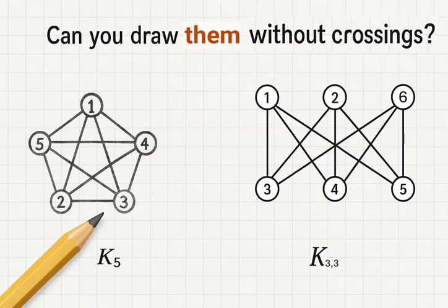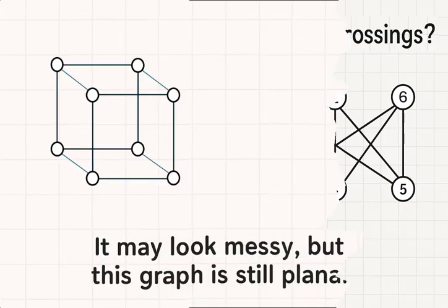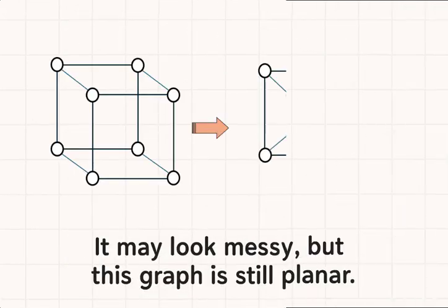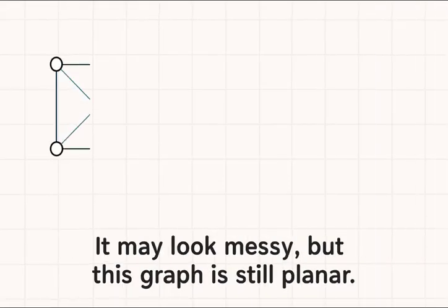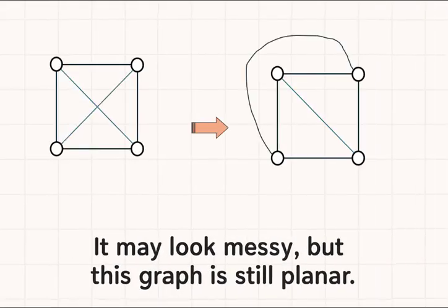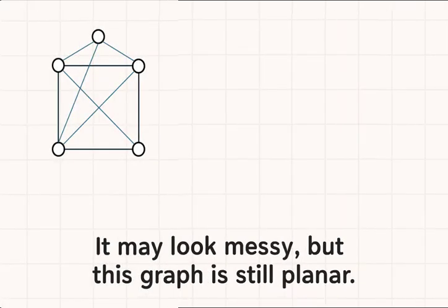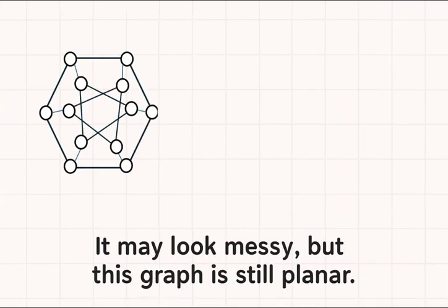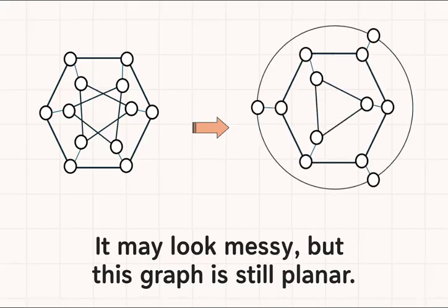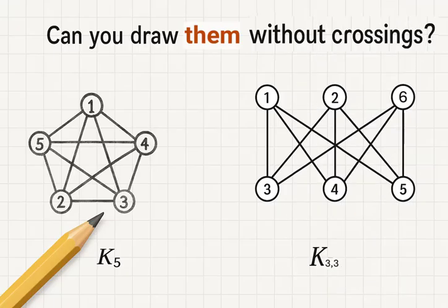Let's explore this together. A graph is called planar if it can be drawn on a flat surface, like a piece of paper, without any of its edges crossing. It doesn't matter how messy the drawing looks at first. If there's even one way to draw the graph with no crossings, then it's considered planar. But some graphs, like K5 and K33, truly cannot be untangled. And we'll soon prove why. Let's take a closer look.